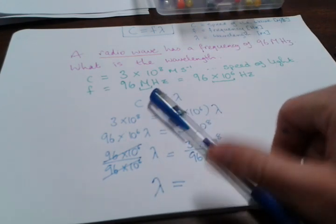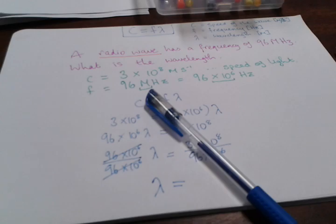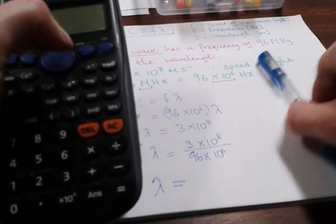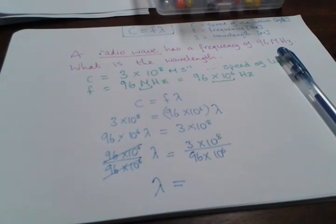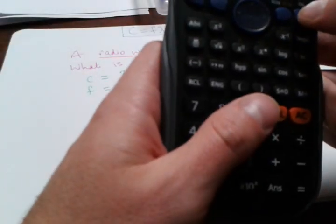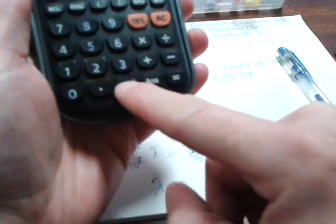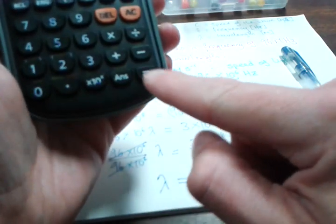If I get a calculator, lambda is 3 × 10^8 divided by 96 × 10^6.